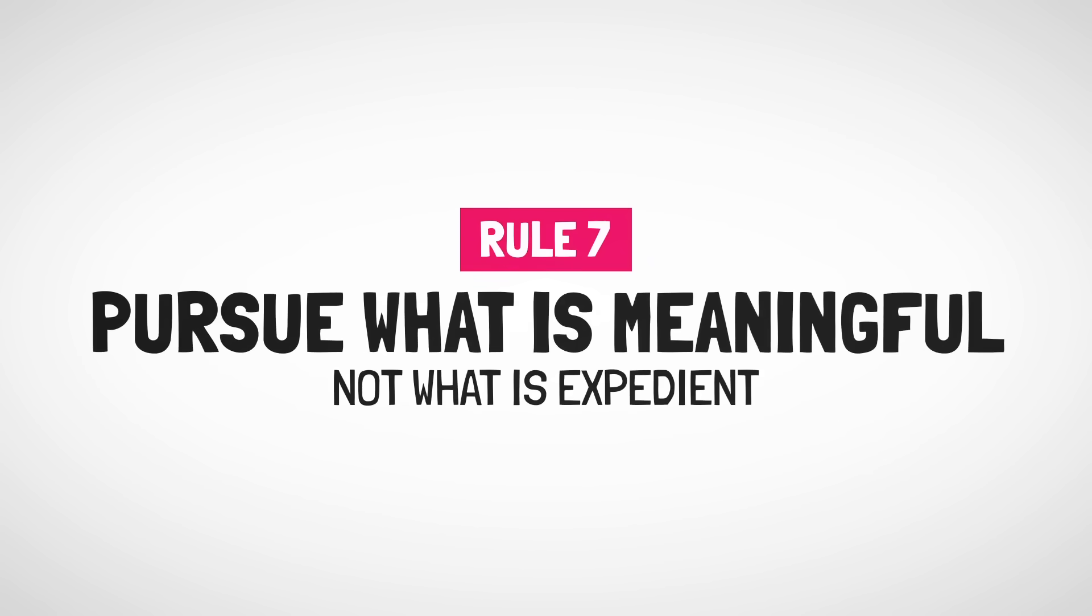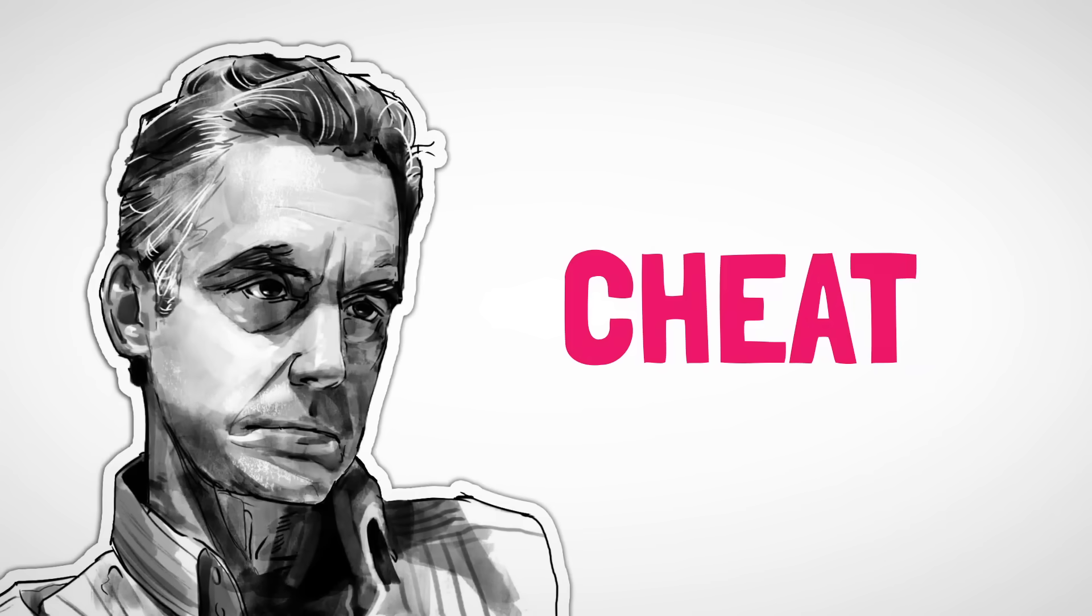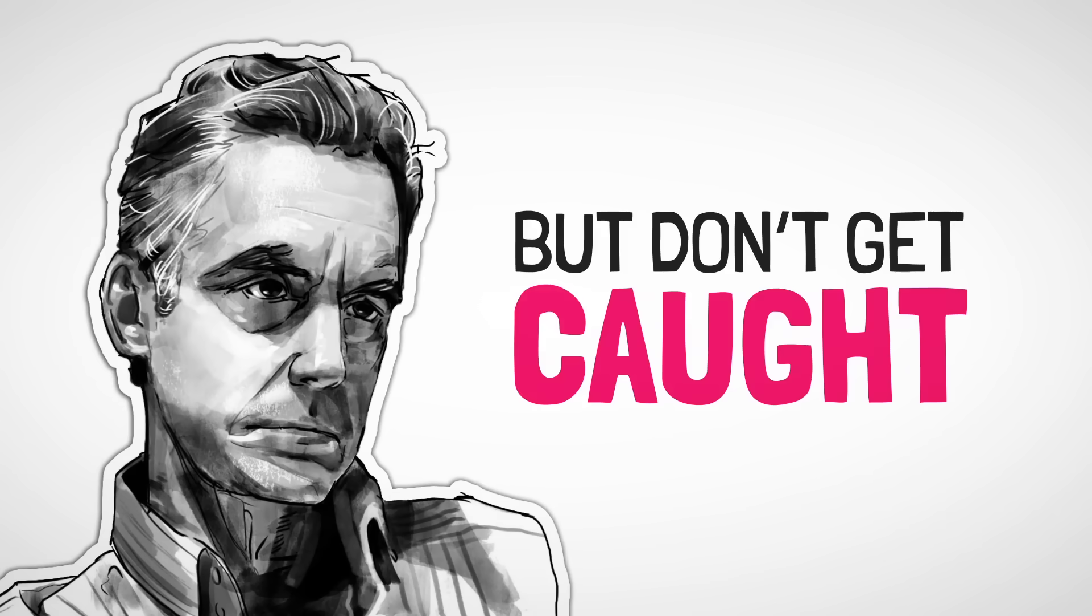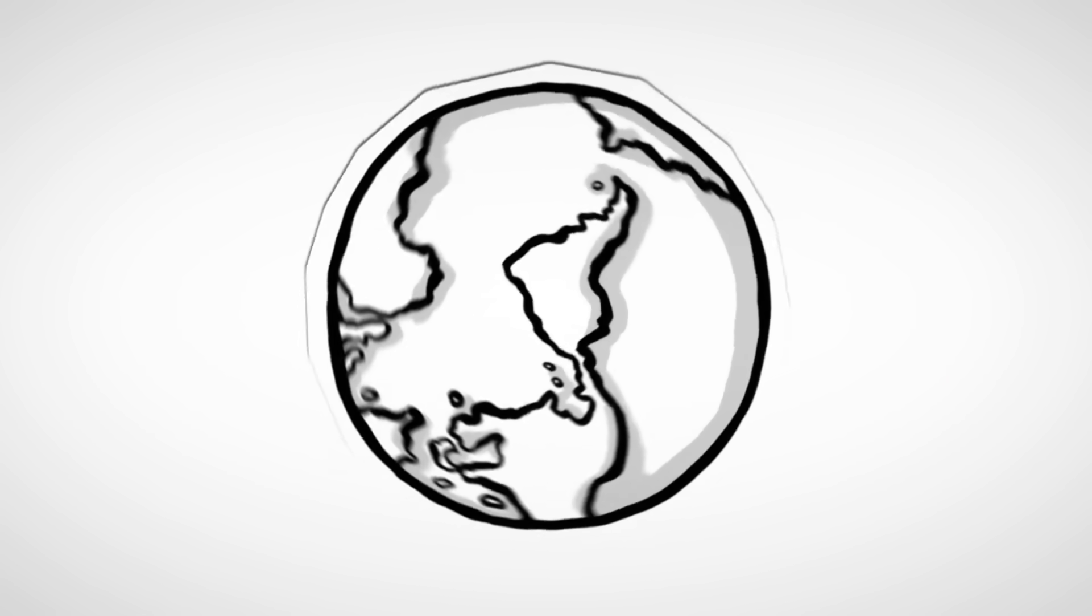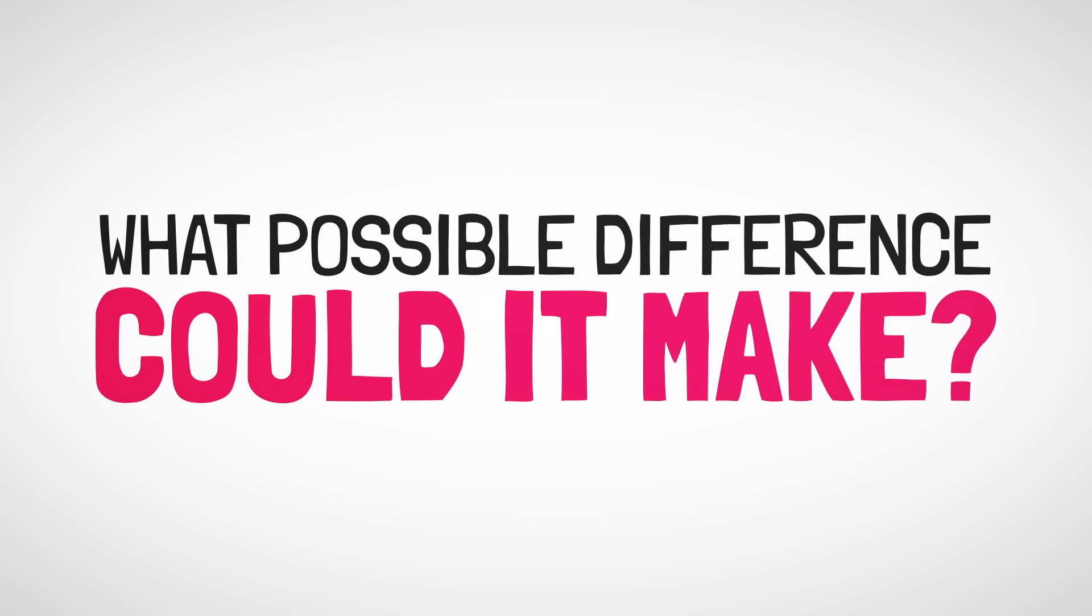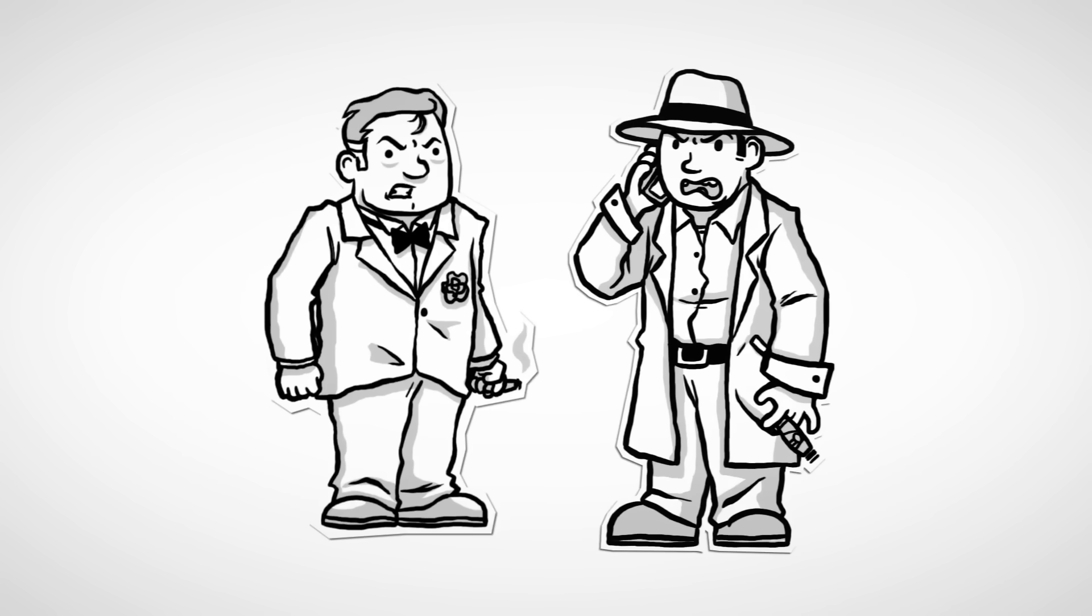Rule 7: Pursue what is meaningful, not what is expedient. Pursue pleasure, lie, cheat, steal, deceive, manipulate, but don't get caught. In an ultimately meaningless universe, what possible difference could it make? That's what it means to be expedient, and to this, Peterson is opposed.